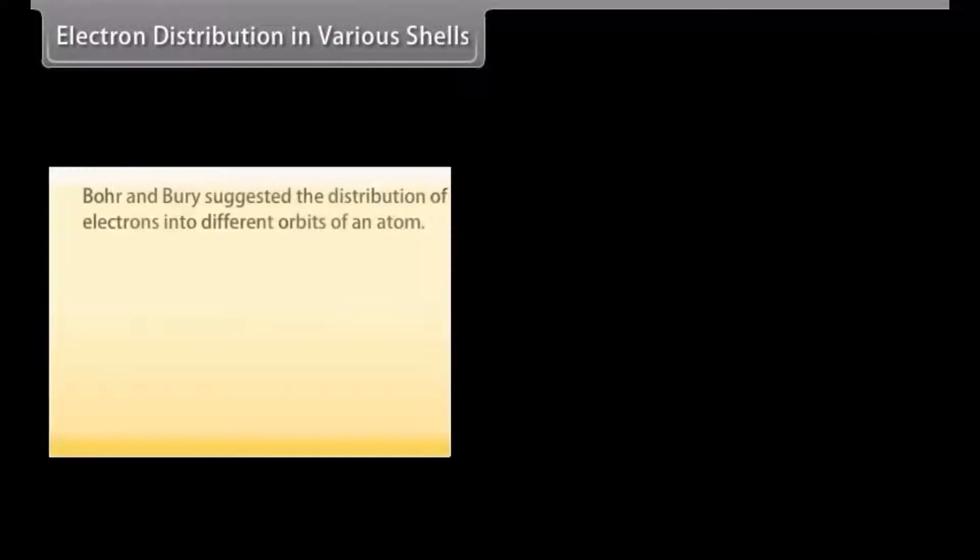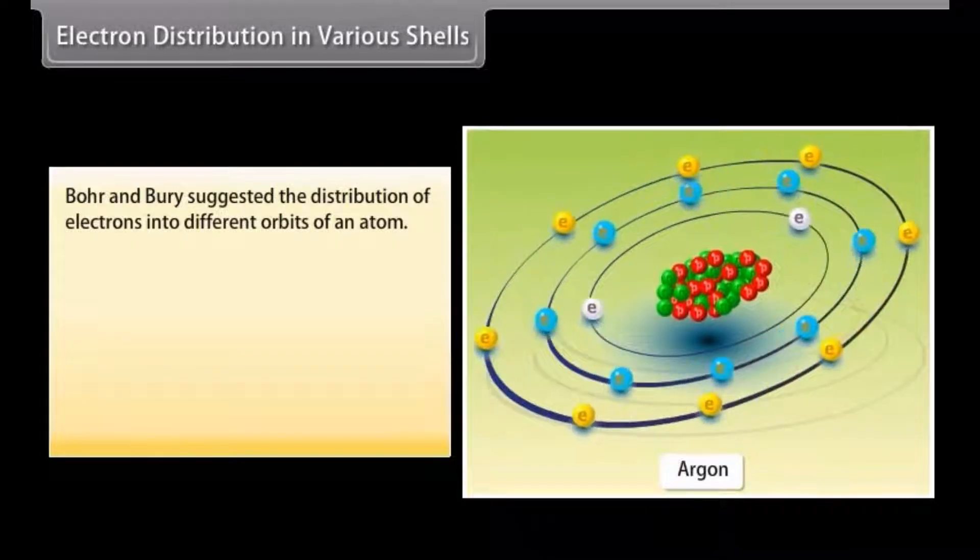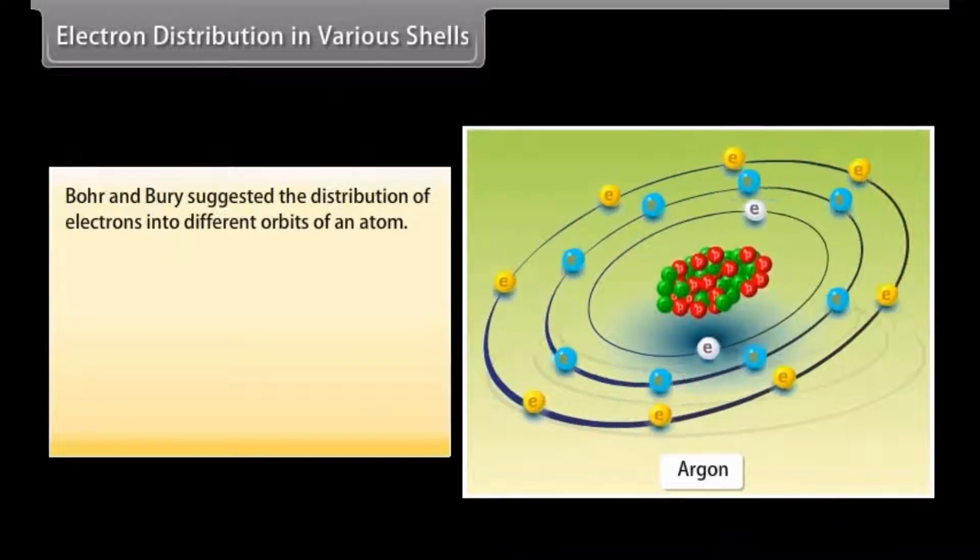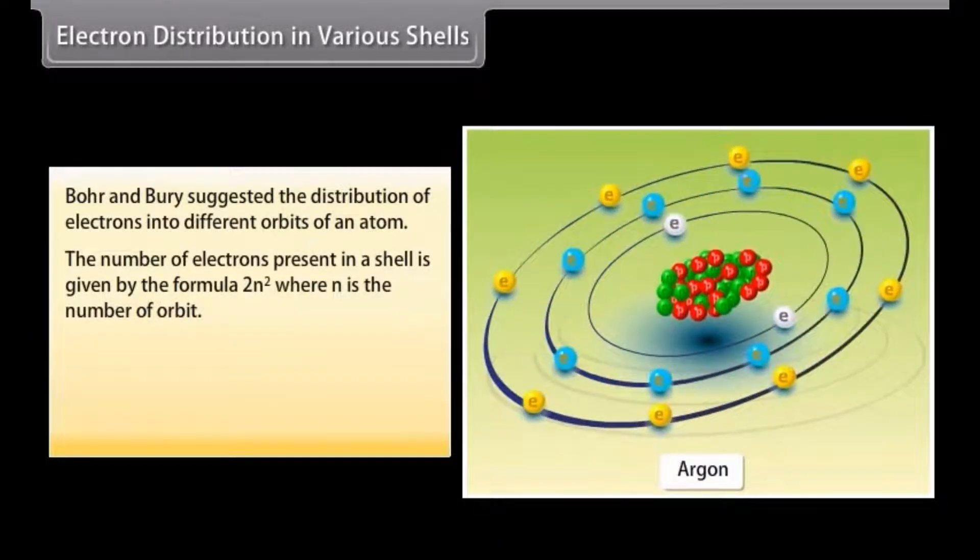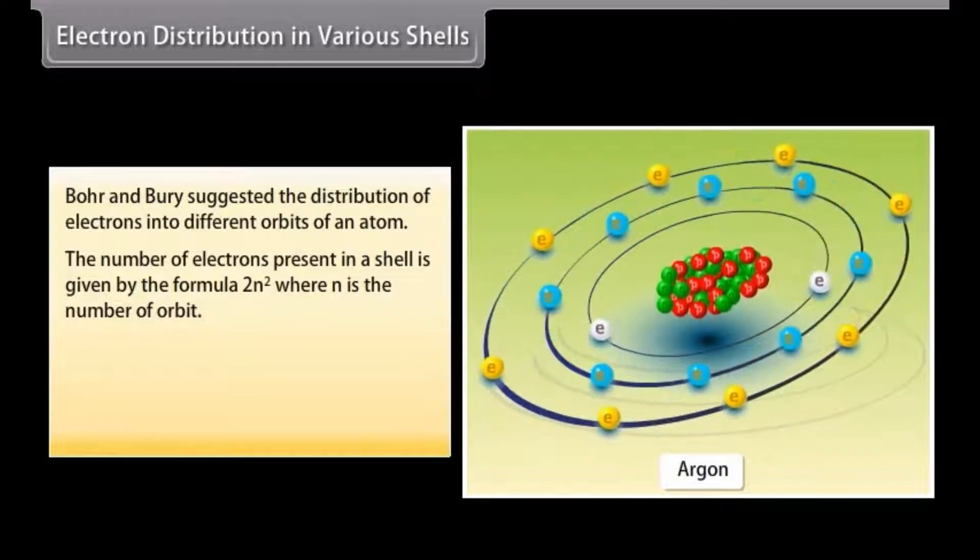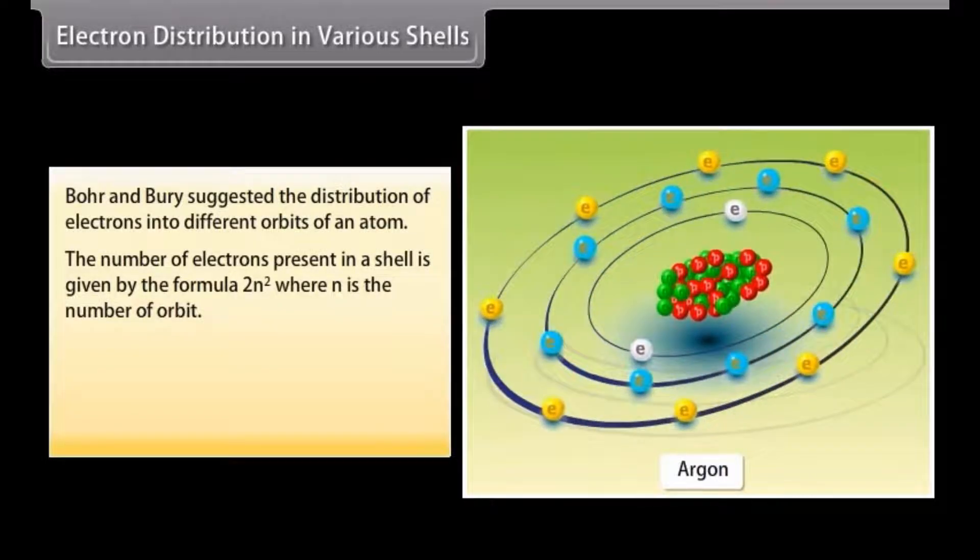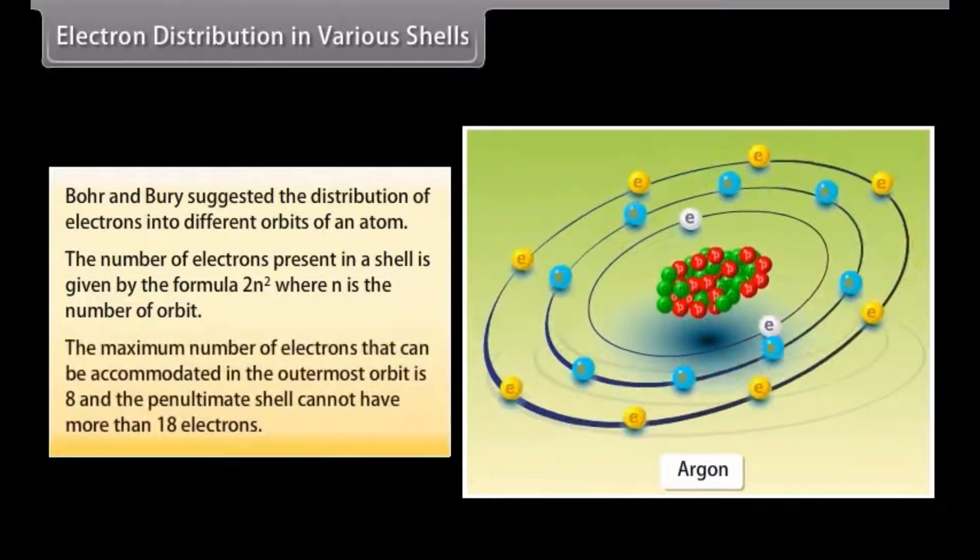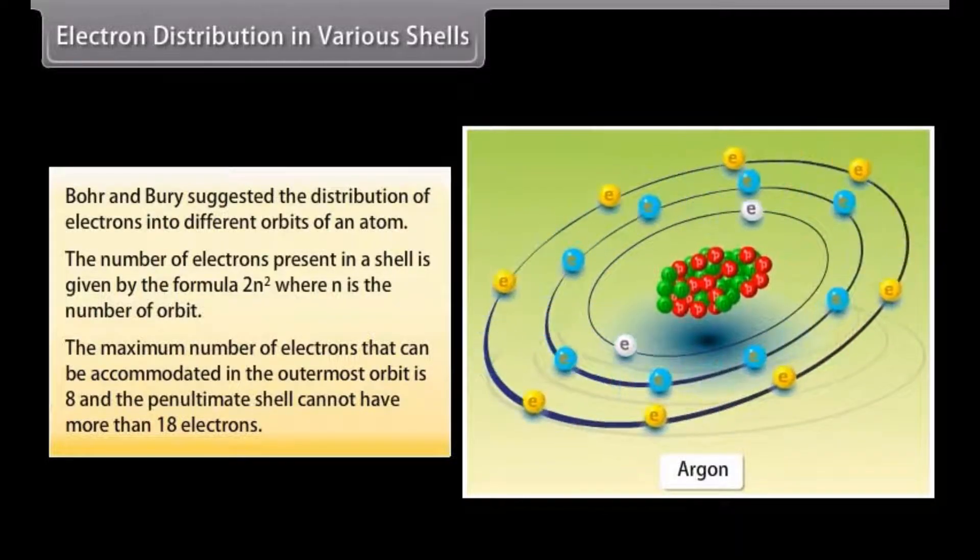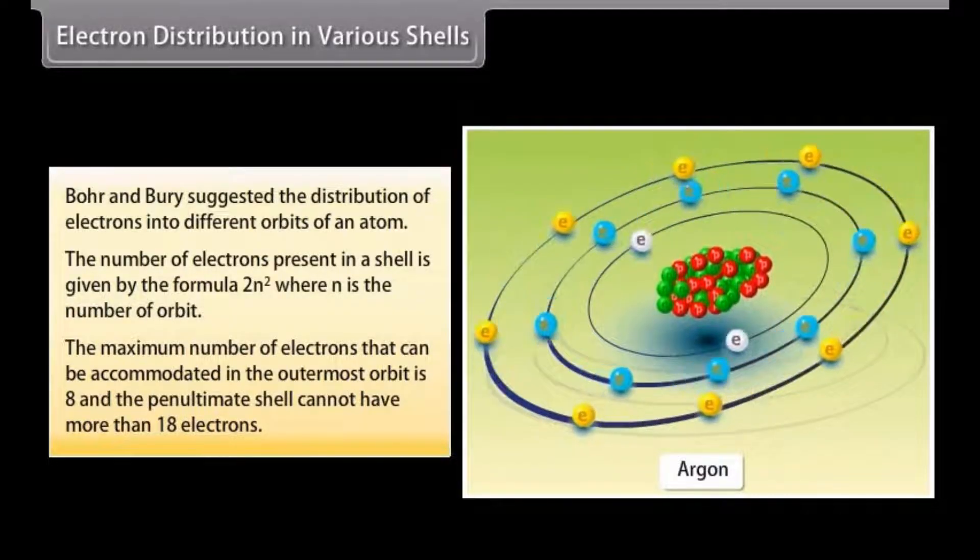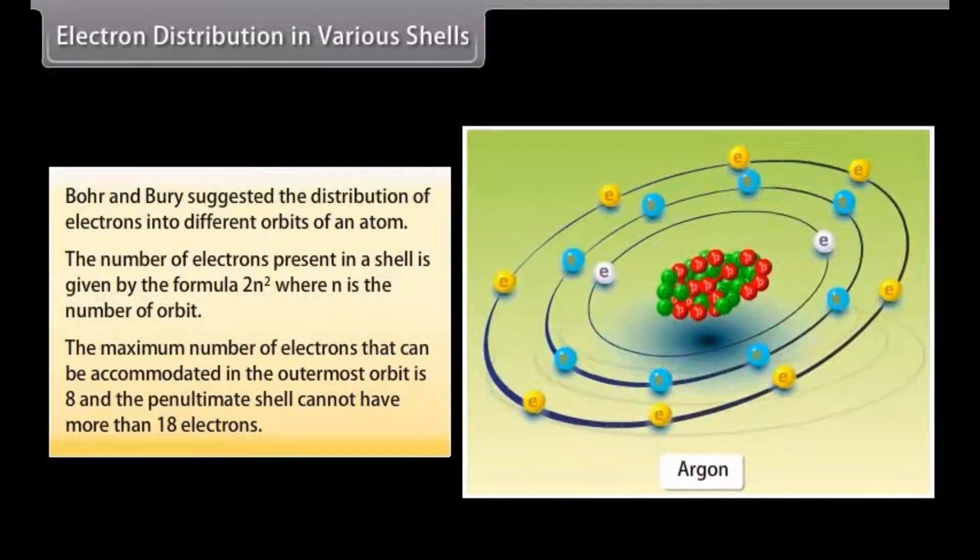Electron distribution in various shells. Bohr and Burry suggested the distribution of electrons into different orbits of an atom. The number of electrons present in a shell is given by the formula 2N squared, where N is the number of orbit. The maximum number of electrons that can be accommodated in the outermost orbit is 8, and the penultimate shell cannot have more than 18 electrons.